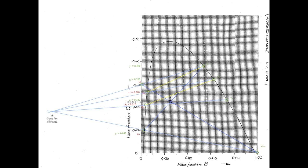We then continue in the same way. We draw our line from the delta point through L₂ to locate V₃. V₃ and L₃ are in equilibrium, and we obtain those values from the x-y graph. Those two points are plotted and we draw a tie line to join them up.